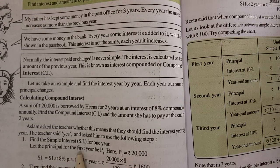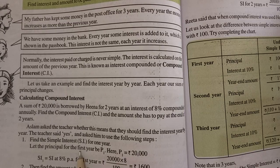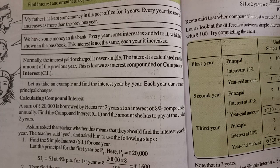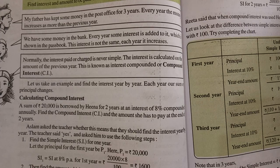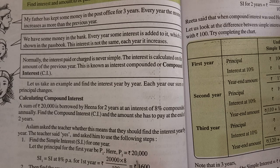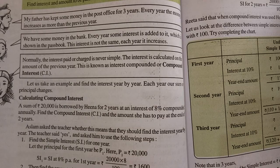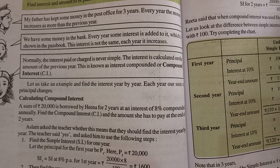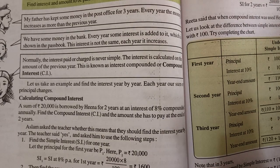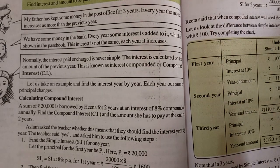First step: find the simple interest for the first year. Let the principal for the first year P1 = rupees 20,000. Interest = 20,000 into 8 upon 100 = rupees 1,600. Then find the amount at the end of the year: principal plus simple interest becomes the principal for the next year. So P2 = 20,000 + 1,600 = rupees 21,600.